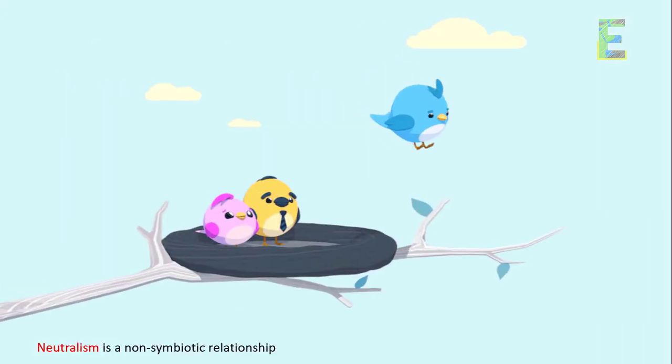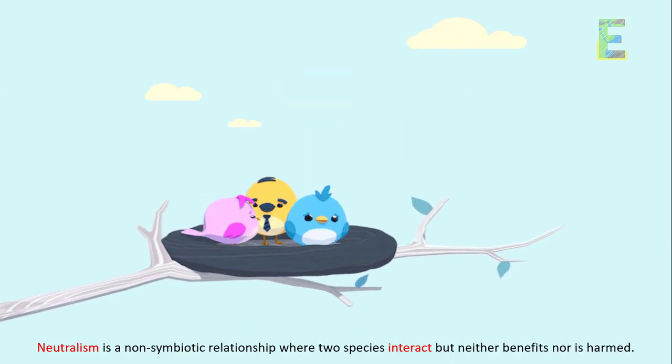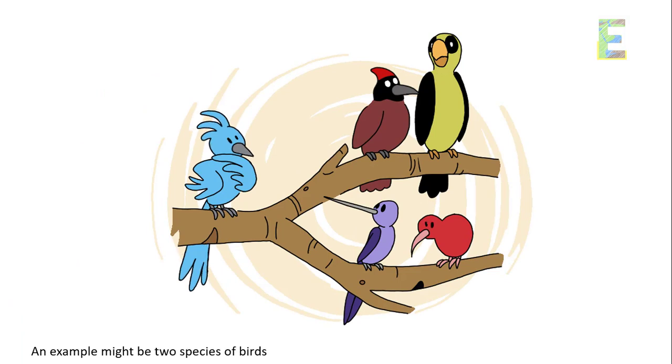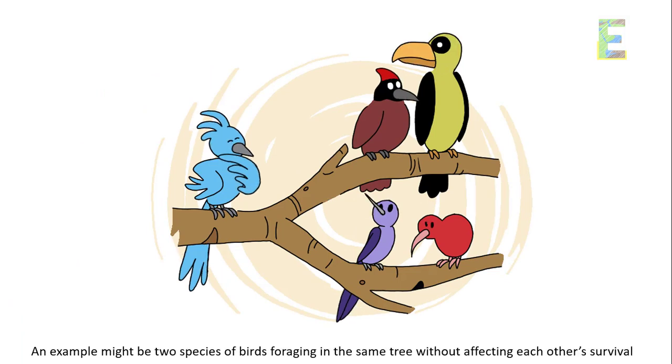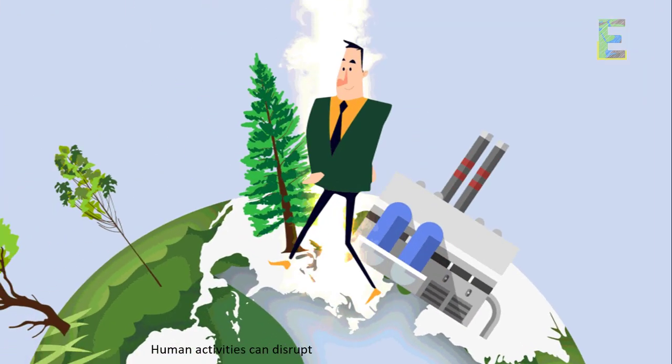Neutralism. Neutralism is a non-symbiotic relationship where two species interact but neither benefits nor is harmed. An example might be two species of birds foraging in the same tree without affecting each other's survival.